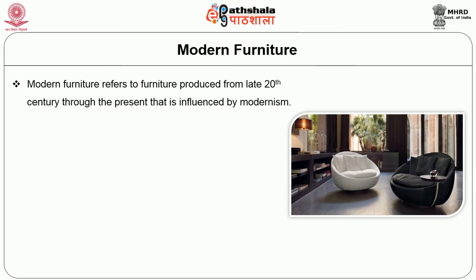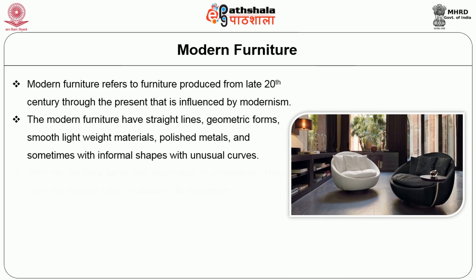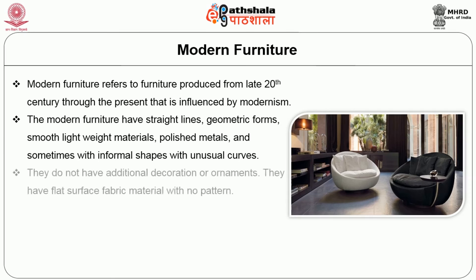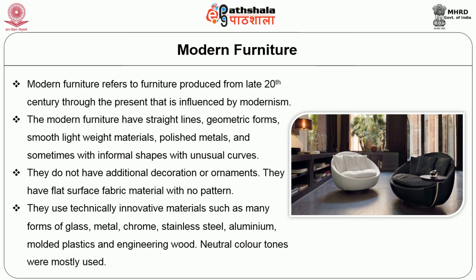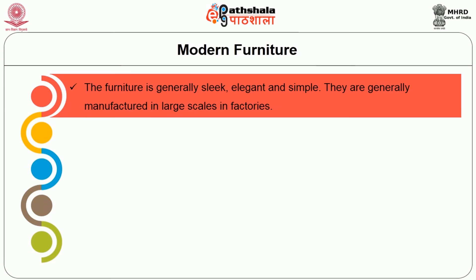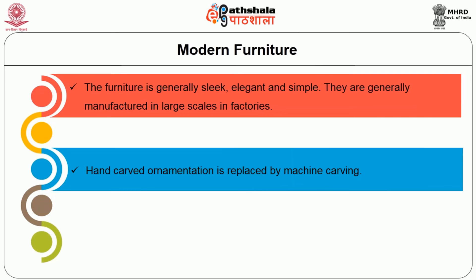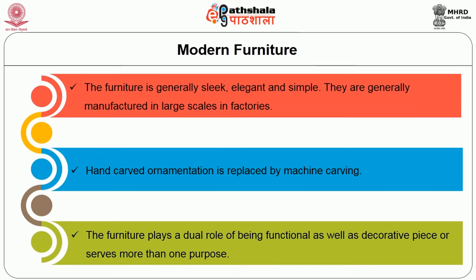Modern Furniture: Modern furniture refers to furniture produced from the late 20th century through the present that is influenced by modernism. Modern furniture features straight lines, geometric forms, smooth lightweight materials, polished metals, and sometimes informal shapes with unusual curves. It does not have additional decoration or ornaments, has flat surface fabric with no pattern, and uses technically innovative materials such as many forms of glass, metal, chrome, stainless steel, aluminum, molded plastic, and engineered wood. Neutral color tones are mostly used. The furniture is generally sleek, elegant, and simple, and is manufactured in large scale in factories. Hand-carved ornamentation is replaced by machine carving, and the furniture plays a dual role of being functional as well as decorative, or serves more than one purpose.